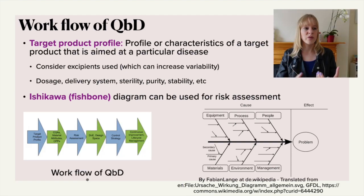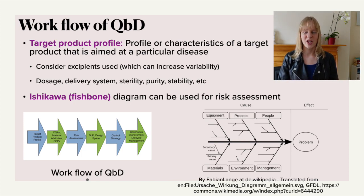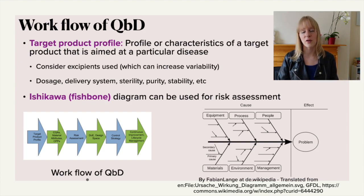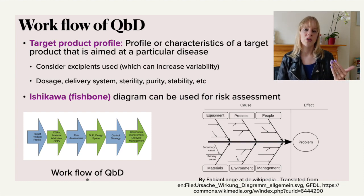First of all, you need to think about what variation in product you are able to tolerate. Particularly for pharmaceutical products, this is quite a narrow range — when does it start to become dangerous? There are also certain diagrams that you can use. You might know these as fishbone diagrams, or Ishikawa diagrams, where you start to look at what are the risks of certain parameters.